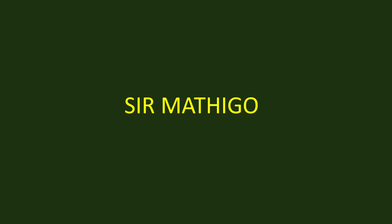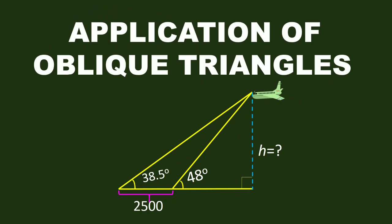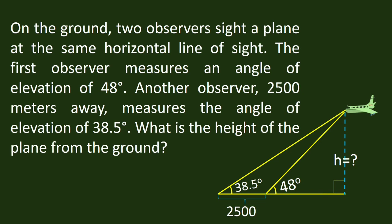Hi there, welcome to Sir Matigot channel. Today I am going to discuss application of oblique triangles. Example: on the ground, two observers sight an airplane at the same horizontal line of sight. The first observer measures an angle of elevation of 48 degrees. Another observer, 2,500 meters away, measures the angle of elevation of 38.5 degrees. What is the height of the airplane from the ground? The figure is shown below and the given parts are indicated. The vertical distance from the plane to the ground is the height that is in question.